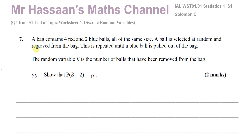The question says: a bag contains 4 red and 2 blue balls, all of the same size. A ball is selected at random and removed from the bag. This is repeated until a blue ball is pulled out of the bag. The random variable B is the number of balls that have been removed from the bag.